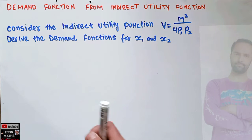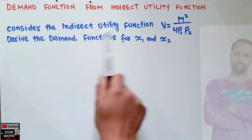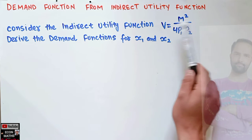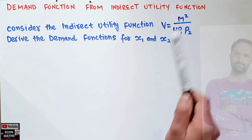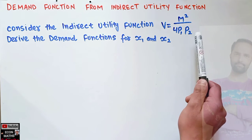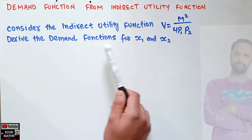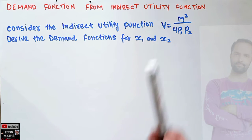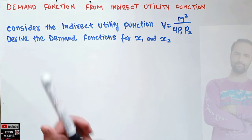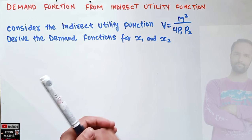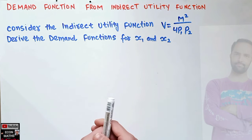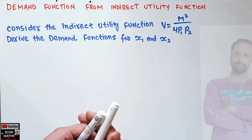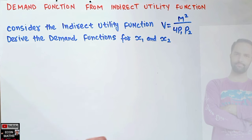In this video we will learn how to derive the demand functions from a given indirect utility function. The question is: consider the indirect utility function V = M² / (4·P1·P2), where M denotes the budget or income of the consumer, and P1 and P2 are the prices of goods x1 and x2. We have to derive the demand functions for goods x1 and x2. By indirect utility function, we mean when utility is a function of income and prices of the two goods. From that we have to calculate the demand function, and we will be using Roy's Identity.